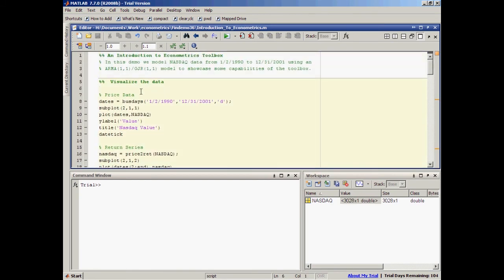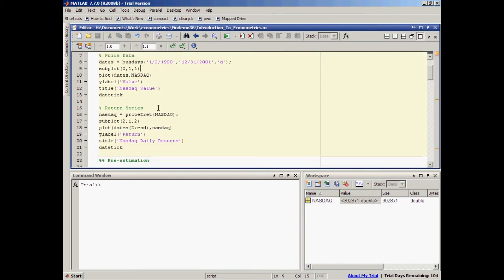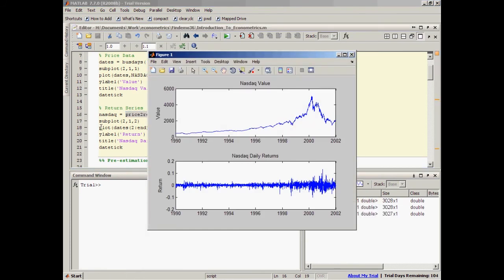Let's first take a look at the plot of the data. So here, I have used the function bizdays, which is a function in Financial Toolbox, to generate a vector of business days from January 1990 to December 2001, and then I use the function price2return to convert the price series to return series, and then I use subplot and plot to plot both series in the same figure. So here, you can see the index values and the return values.